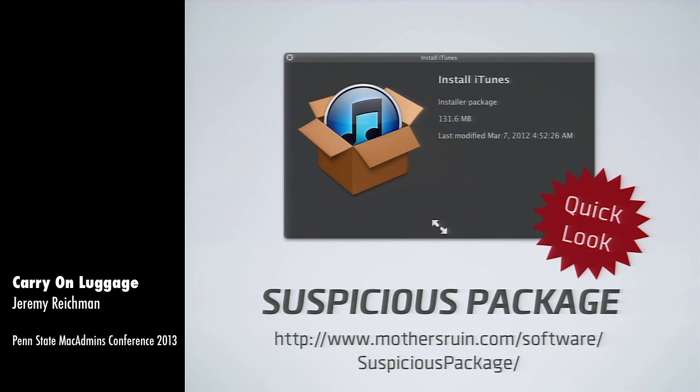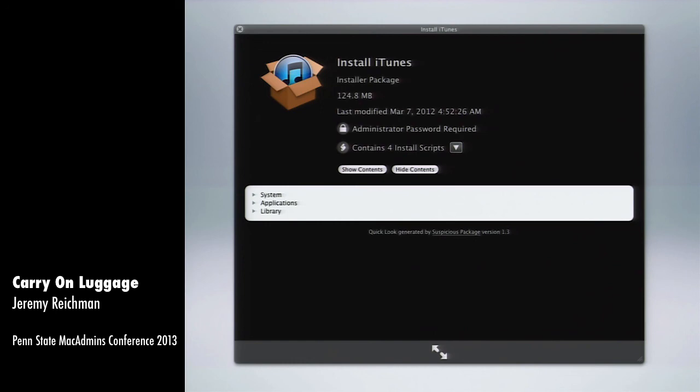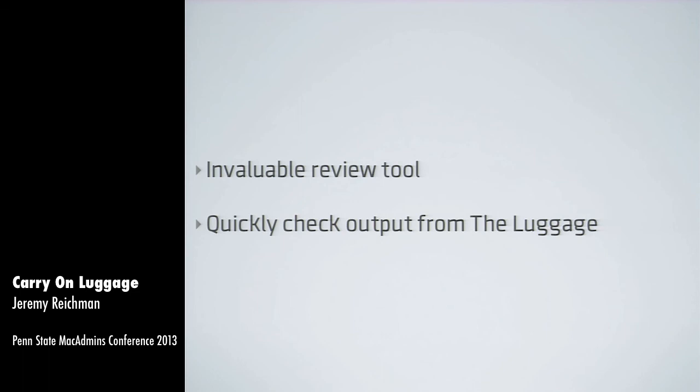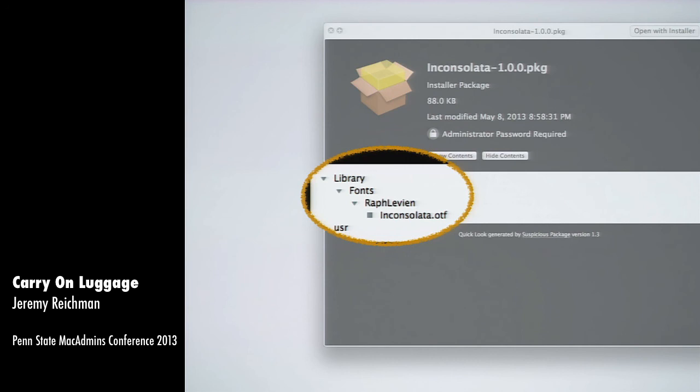I talked earlier about Suspicious Package, a Quick Look plug-in that I recommend you install. It's a very handy tool for letting you look at the output of your packaging efforts — you can look at the scripts, look at the contents and expand them. I find it to be an invaluable review tool when I'm checking output from Luggage.